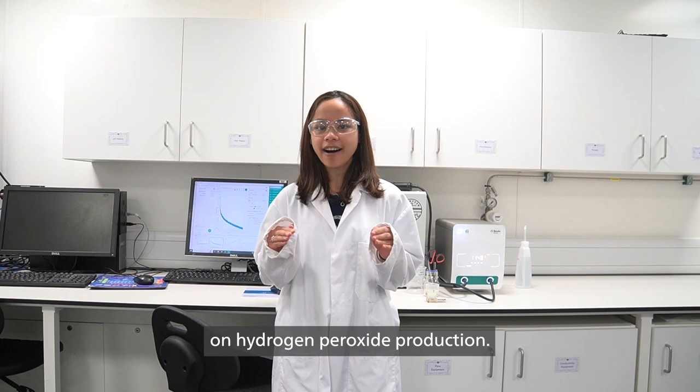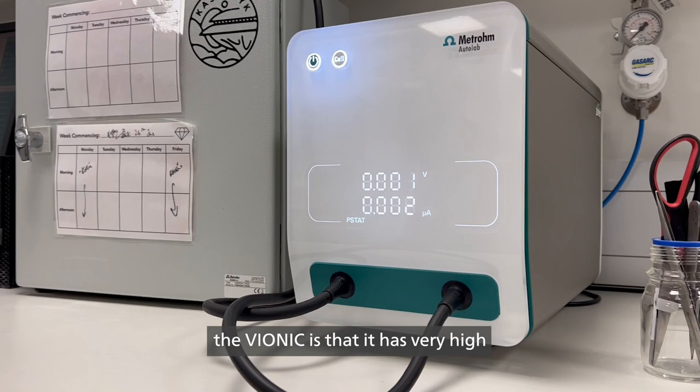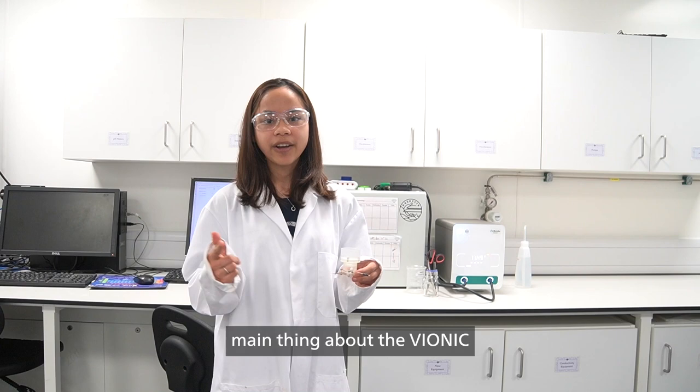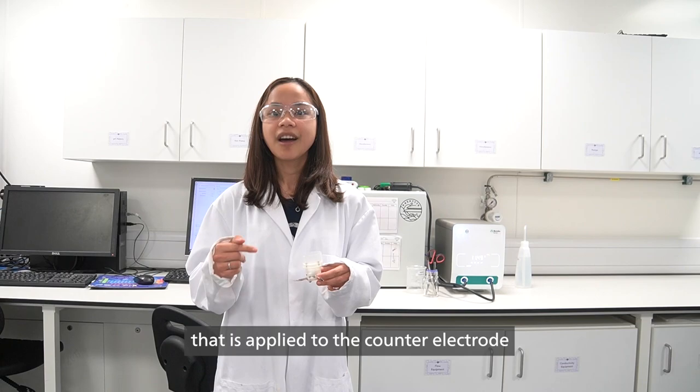My project is mainly focusing on hydrogen peroxide production. So one main reason that I really like the Autolab is that it has very high compliance, so we can also apply very high potential to the counter electrode. Another main thing about the Autolab is that you can track the potential applied to the counter electrode, which is amazing.